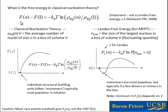The free energy in classical nucleation theory is directly connected to the population distribution of nuclei of different sizes at equilibrium. In particular, the free energy for a nucleus of size N relative to the free energy for a nucleus of size 1 is minus kT times the log of the population at equilibrium of nuclei of size N divided by the population at equilibrium of nuclei of size 1.